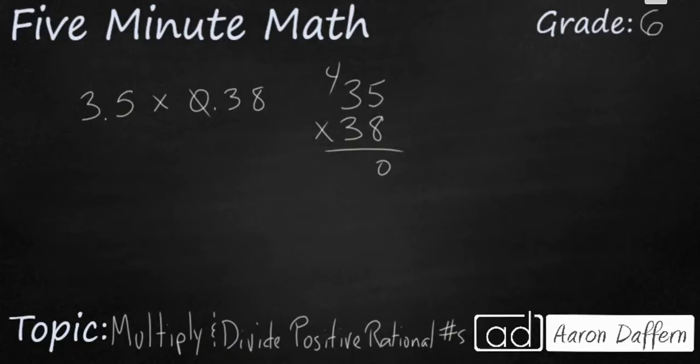So 8 times 5 is 40. 8 times 3 is 24. So we're going to have a 2, and that's going to be 28. Add a 0 for the 10th place. And you just do this like you learned back in 4th grade. And we'll add it, and we'll get 13.30.